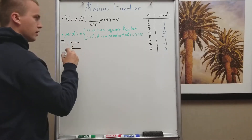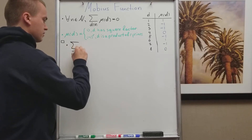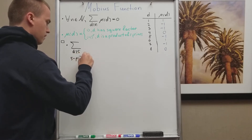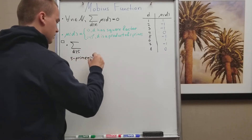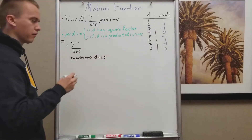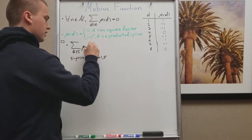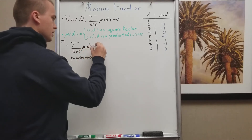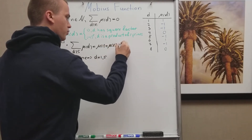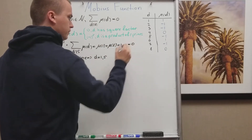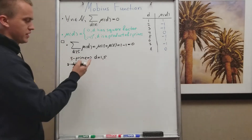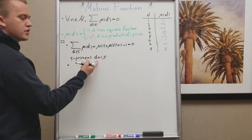Let's consider a couple of examples. Take n = 5, which is prime. The only factors of 5 are 1 and 5 itself. So the sum of μ(d) over divisors d is μ(1) + μ(5) = 1 + (-1) = 0. You can see this works for any prime number, because any prime has exactly two factors.